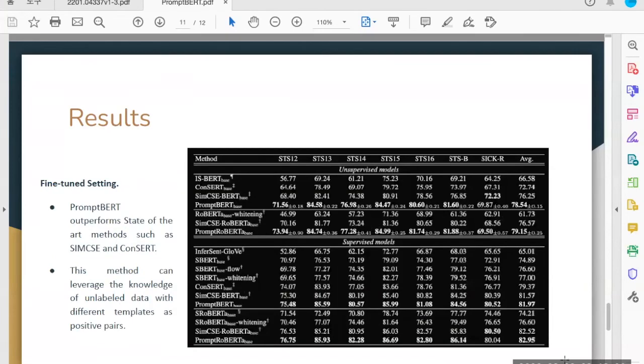In the fine-tuned setting, the proposed approach has been compared with unsupervised models as well as supervised models. In the unsupervised models, you can see that the PromptBERT performance is unstable. The authors have calculated the results over 10 iterations and calculated the standard deviation. You can still see that it outperforms all the state-of-the-art methods like SimCSE and ConSERT, which are contrastive methods. This is because of the template denoising method that the authors have introduced.